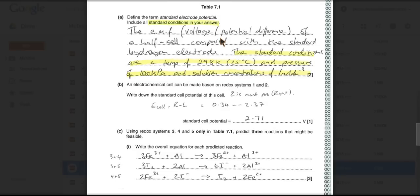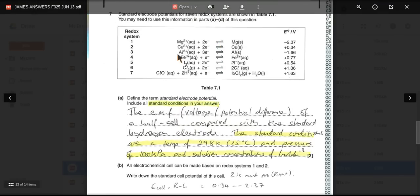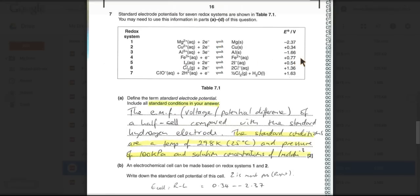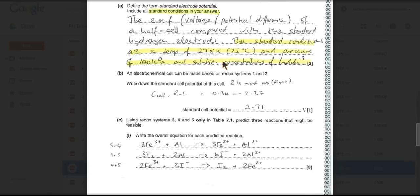And the last one, 4 and 5. So we've got 2 positive ones now, 0.77, 1.54. So now the iron one runs forwards. The iodine one runs in reverse. And in terms of electrons, we've got 2 there, 2 there and 1 there. So we double this one out and we keep this one the same. This one's running forwards. So you're going to have 2 of those plus 2 of those makes 2 of those and an I2. So there's the equation there.